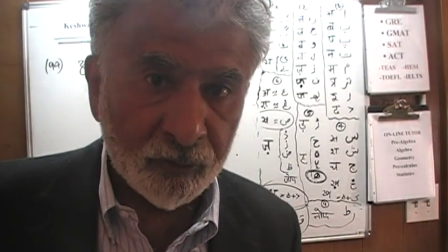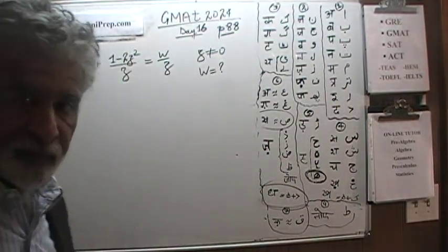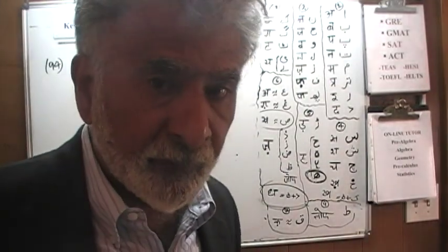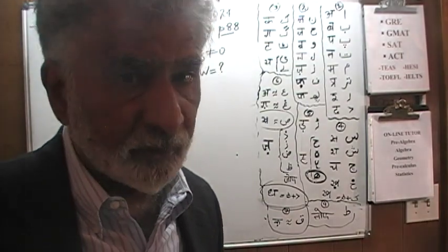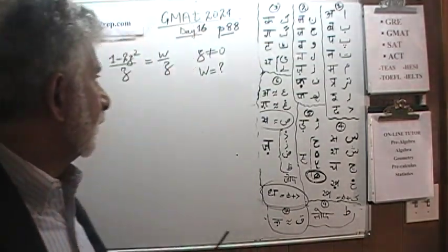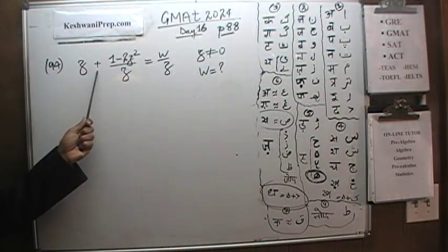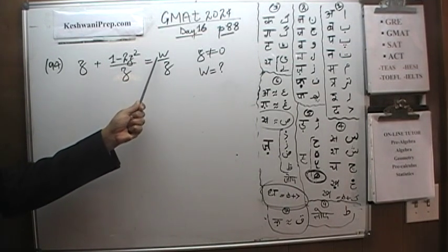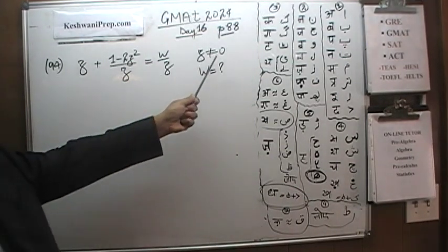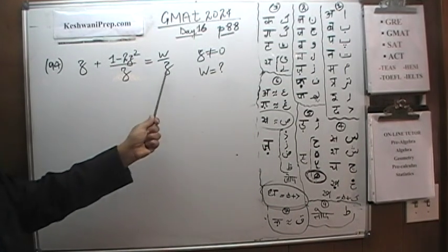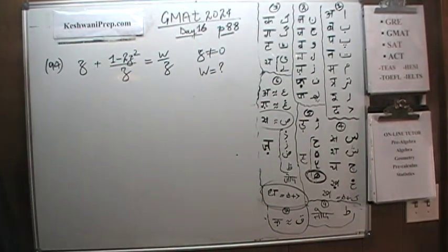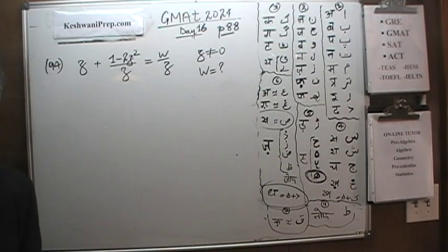The very first problem is problem 94, and as you can see it's already on the blackboard. I'm going to read it to you, then get another frame — I want you to pause the video and do it yourself. It's a very straightforward problem. It says z plus one minus two z squared over z is equal to w over z. We are told that z does not equal zero. The question is: how much is w? Solve this equation for w. Go ahead, pause the video.